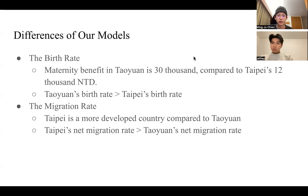Another factor that we predicted differently is the migration rate. Taipei is a more developed city compared to Taoyuan. Therefore, the net migration rate in Taipei is predicted to be higher than Taoyuan's.